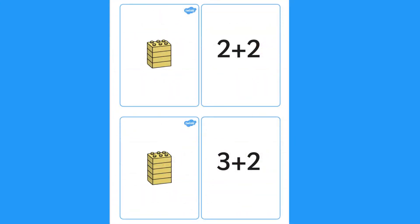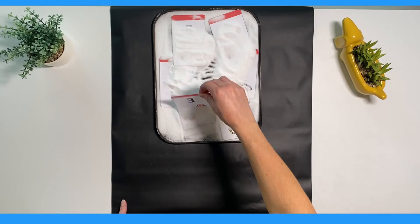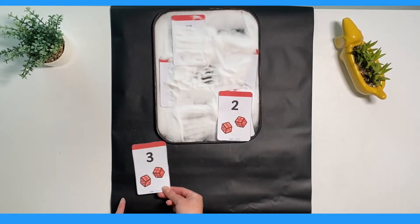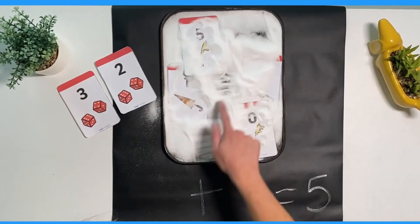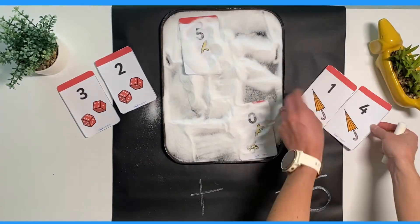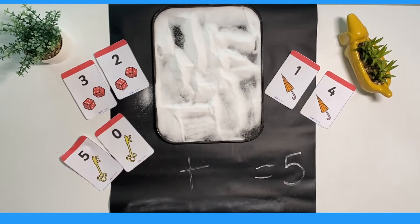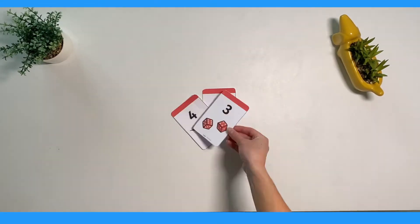These can support different areas such as number, shape and measure. You could use some of our number bond matching cards to help children to match items that total five. You could hide these in a sensory tray for children to find and then match. Can they write the number sentence? Or play a game of snap.